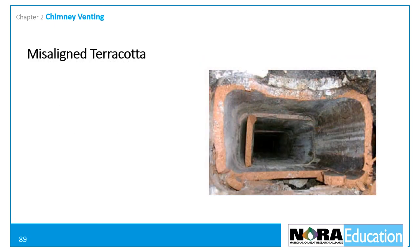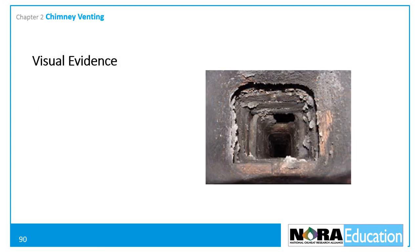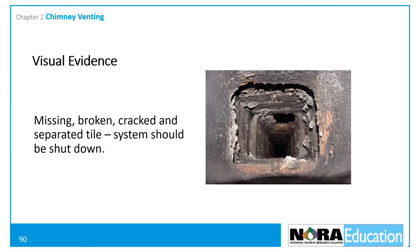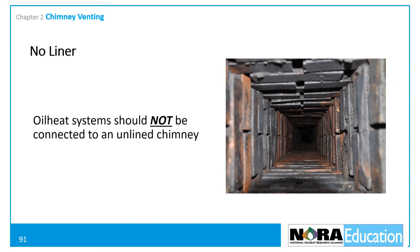Misaligned terracotta tiles at the joint, as well as missing, broken, cracked, or flaking tiles are additional warning signs. Visual evidence of severe damage — including missing, broken, cracked, and separated tiles — warrants shutting down the system. No liner installed: oil heat systems should not be connected to a chimney without a liner.